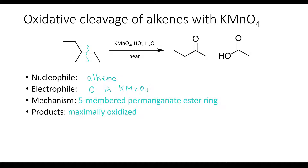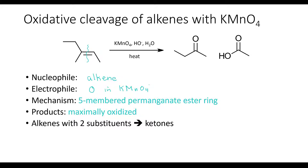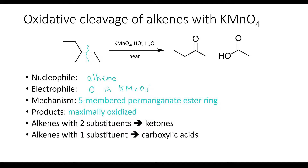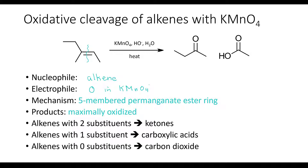If the alkene has two substituents on a carbon, then when that carbon breaks off, the products are going to be ketones. If one of the carbons of the alkene has only one substituent, then that portion is going to become a carboxylic acid. And if one of the carbons of the alkene has no substituent, then when that carbon breaks off, it's going to be oxidized all the way to carbon dioxide.